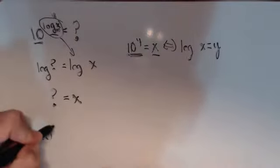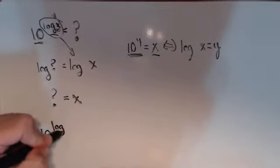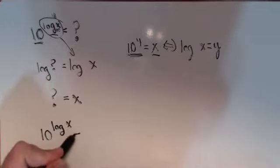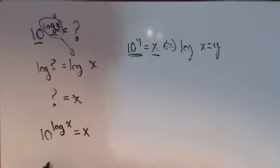What this says is 10 raised to the log base 10 of x equals x. So this is called an identity property because we get back to where we started.